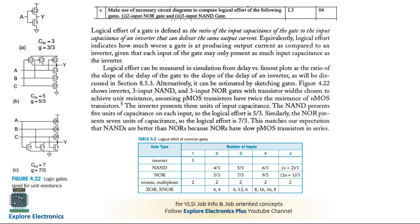Next question: use the necessary circuit diagram to compute the logical effort of a two-input NOR gate and a three-input NAND gate. The inverter is taken as reference because logical effort is the ratio of input capacitance of the gate to the input capacitance of an inverter that can deliver the same output current. For the inverter, C_in = 3 and g = 3/3. For the three-input NAND gate, since there are 3 series and 3 parallel transistors, C_in = 5 (3+2), and logical effort = 5/3.